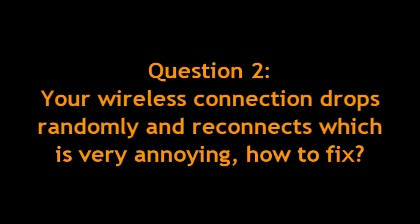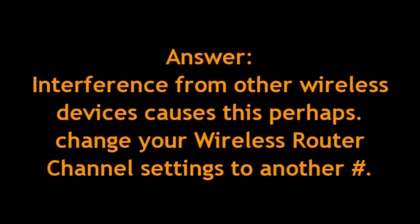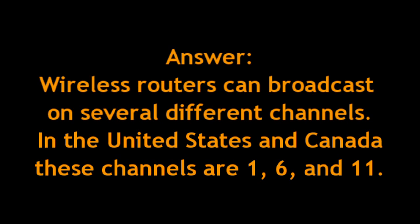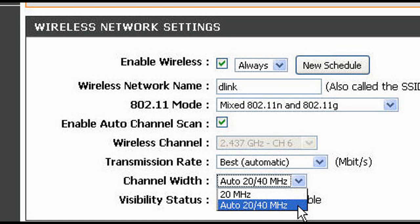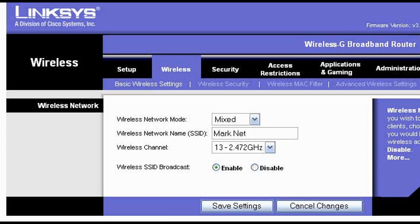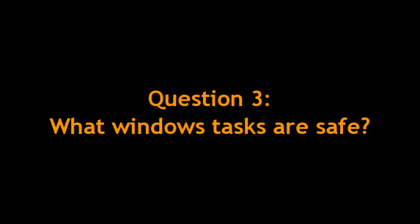Another question I've been getting is about your wireless connection that drops randomly. To fix that, I would start off easy by just changing the channel your router is running and broadcasting on. By default, if it's set to 6, change it to 1 or 11. That's the easiest thing you can do in your router settings — restart your router after saving your settings and see if that makes a difference. It doesn't matter what type of router you have; you should have that option.